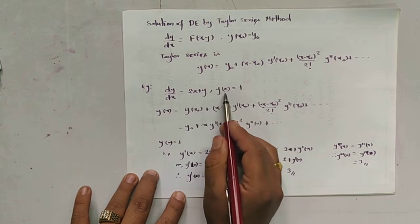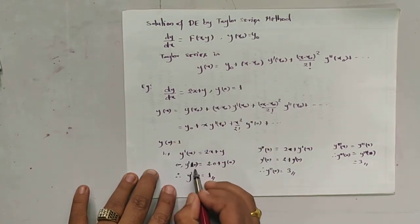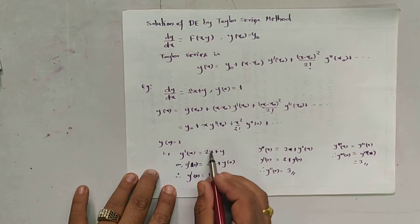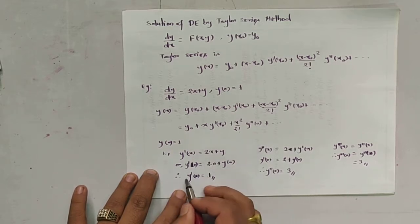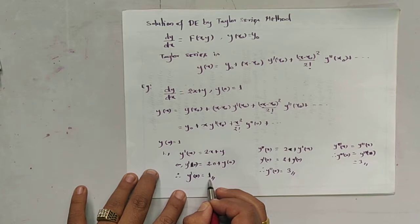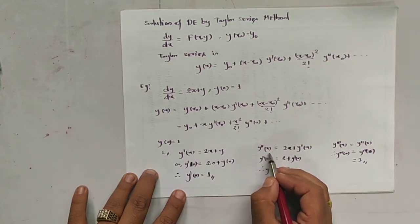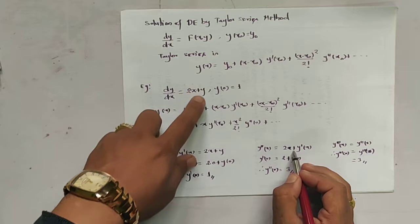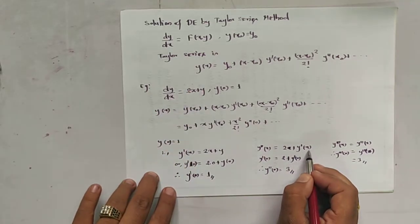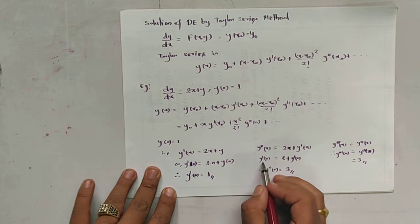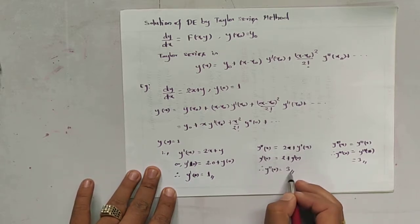Let us suppose x = 0. Then y'(0) = 2(0) + y(0) = y₀ = 1. So y'(0) = 1. Similarly, y''(x) is the derivative of (2x + y), which gives 2 + y'(x). So y''(0) = 2 + y'(0) = 2 + 1 = 3.